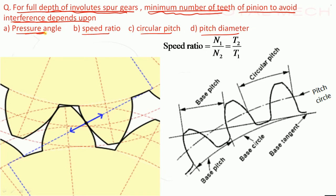So let us see what is pressure angle. This is the pressure angle. It is 20 degree and 14.5 degree. And then speed ratio. Speed ratio is n1 by n2 equal to t2 upon t1, where n is speed, t is number of teeth. And then circular pitch. You can see the circular pitch. The distance is called circular pitch. And then pitch diameter. Pitch diameter is diameter of pitch circle.